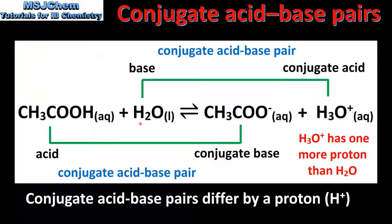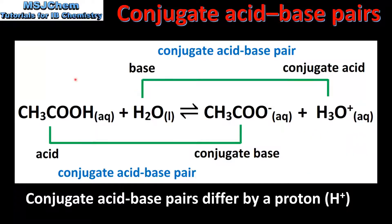Next we look at the water molecule. In the forward reaction the water molecule is the base and its conjugate acid is the hydronium ion. These two species are known as a conjugate acid-base pair. Just like ethanoic acid and the ethanoate ion, they differ by a proton. So from this we can see that in a Bronsted-Lowry acid-base reaction there are two conjugate acid-base pairs.